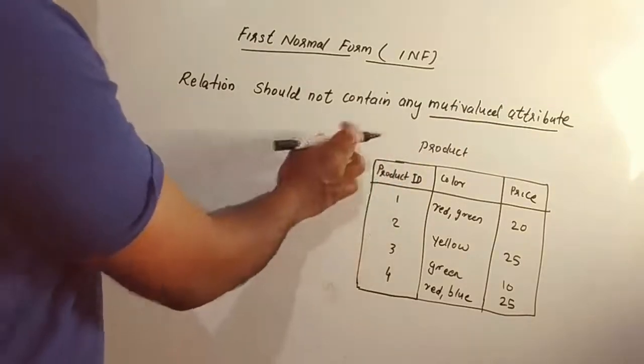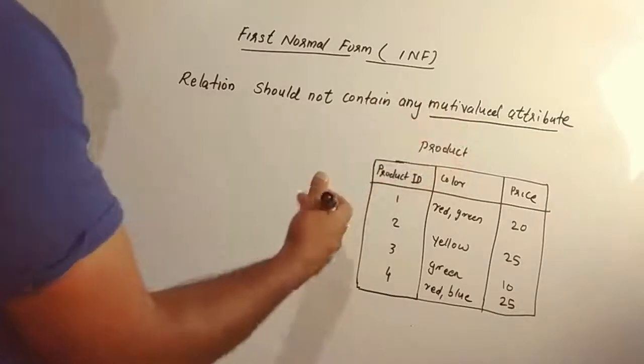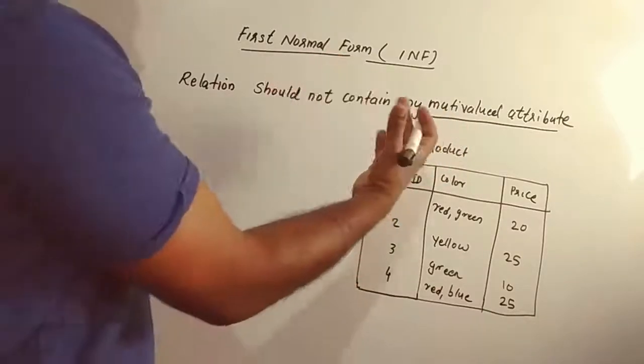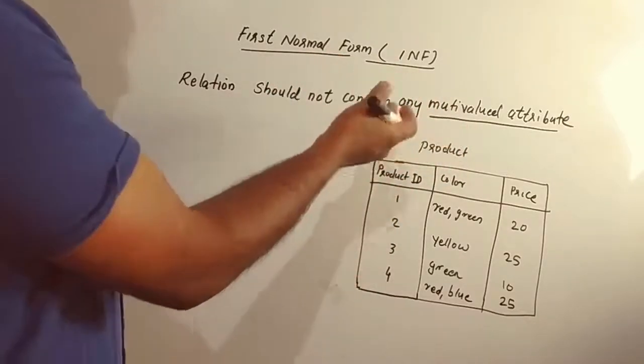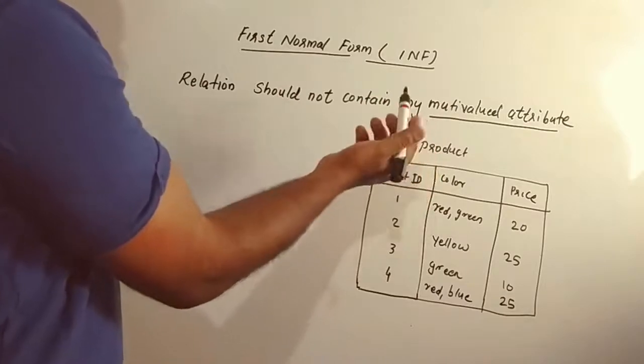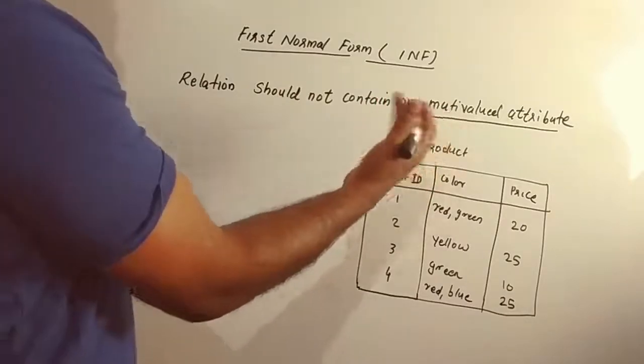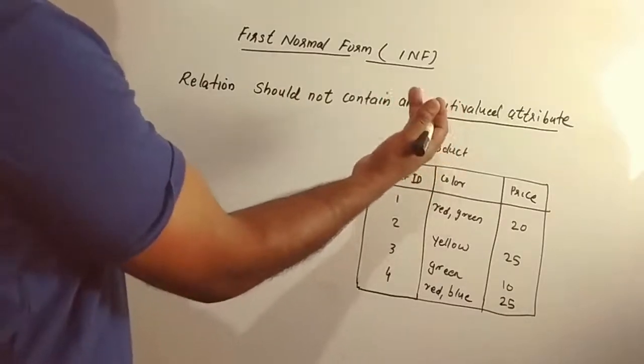At the same time, the attributes are called multi-valued attributes. The attributes are those that can come from one value to another attribute.